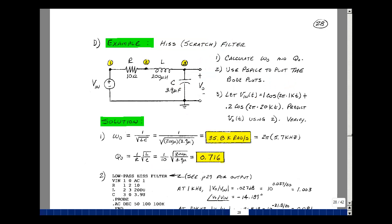Let's consider an example with values for our R, L, and C in our low-pass filter. Here I've got R of 10 ohms, L of 200 microhenries, and C of 3.9 microfarads. Now, besides being a low-pass filter, this is also a design for a hiss or a scratch filter. Hiss is the high-frequency noise that you'd hear on worn tapes. Likewise, if you have scratches on a vinyl record, this can also create high-frequency noise.